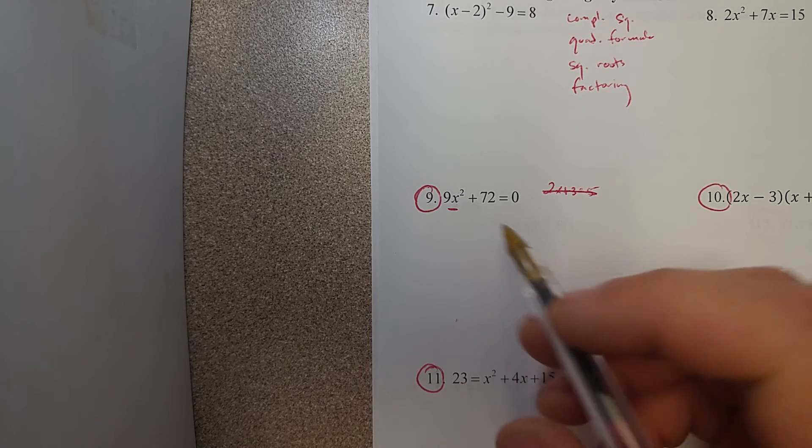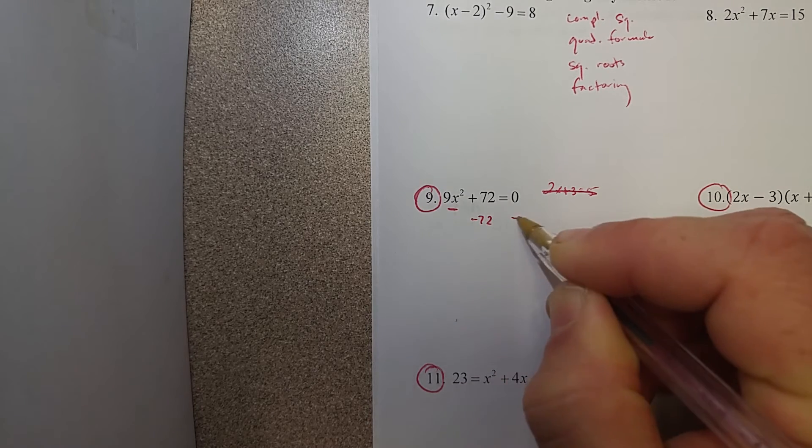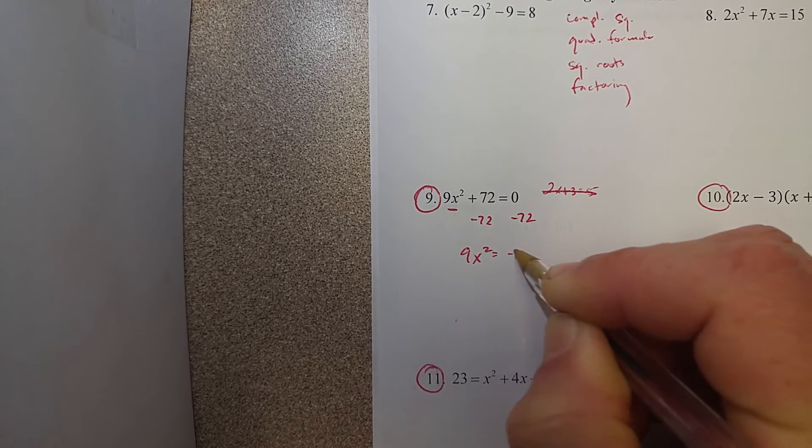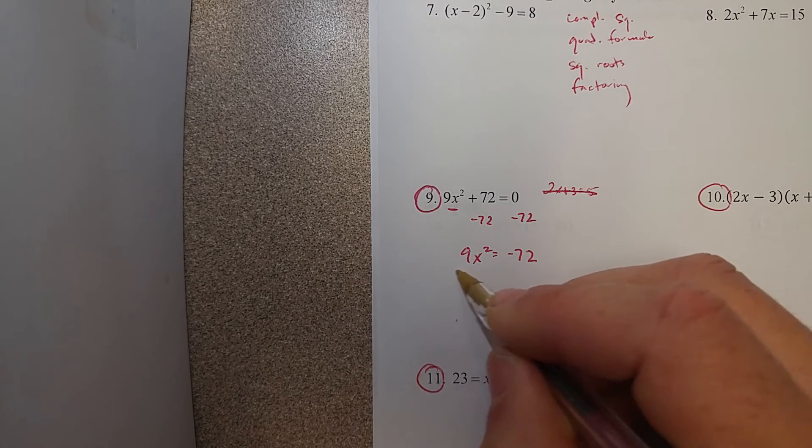So the first step is subtract 72, and then we're going to divide by 9.